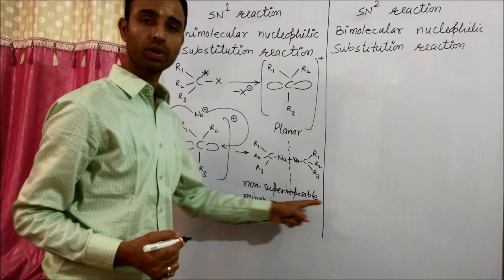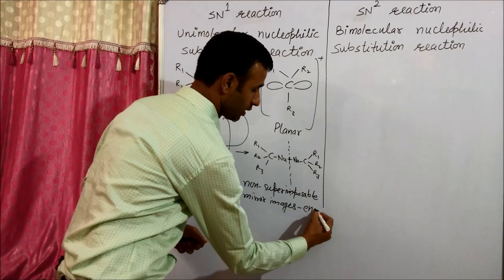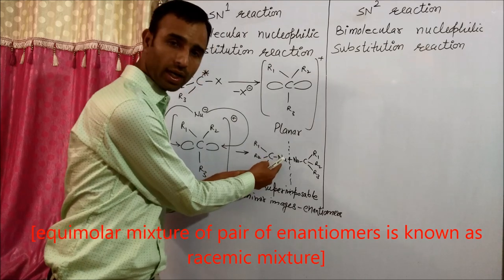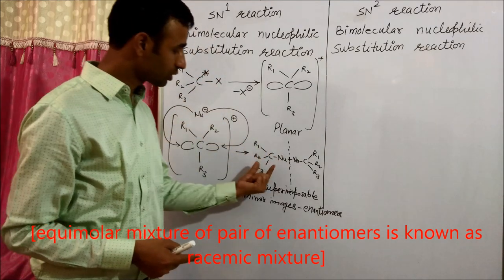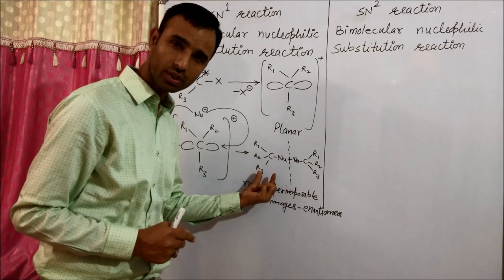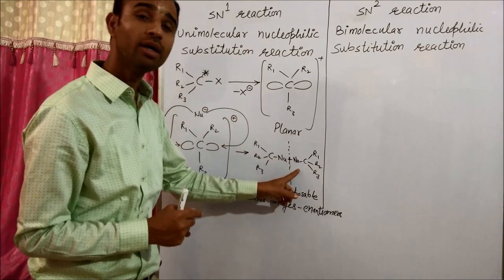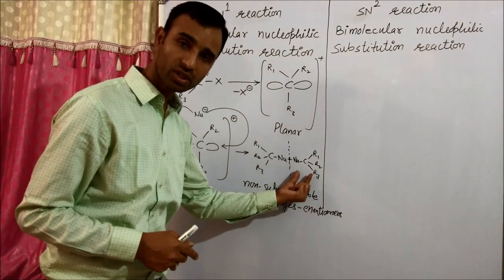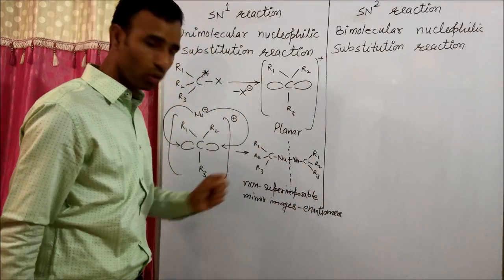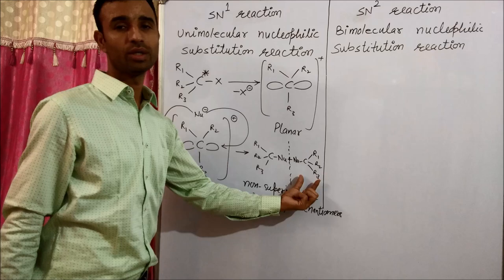Non-superimposable mirror images are known as enantiomers. When the nucleophile is at the same position as X was, that is called retention of configuration. When the nucleophile is at the opposite side, that is called inversion of configuration. So in SN1, both retention of configuration as well as inversion of configuration take place.